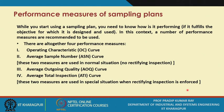While you start using a sampling plan, you need to know how it is performing — whether it fulfills the objective for which it is designed and used. We have already discussed the objectives of using a sampling plan. You must verify whether these objectives are being fulfilled or not. In this context, a number of performance measures are recommended. There are altogether four performance measures. The first one is the operating characteristics curve, which is the first performance measure we always refer to.